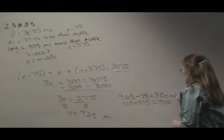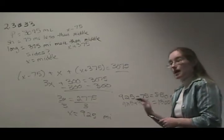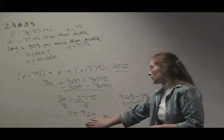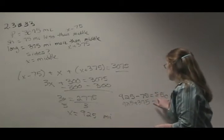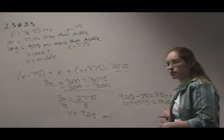So these are all in miles. So what's our final answer? That the sides of the Bermuda Triangle are 925 miles, 850 miles, and 1,300 miles.